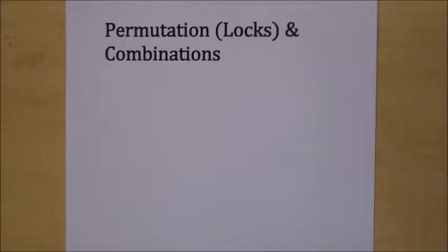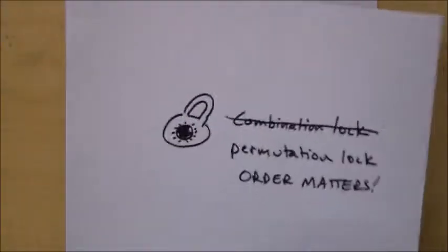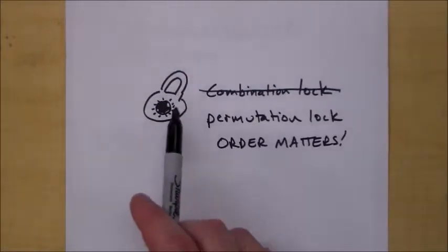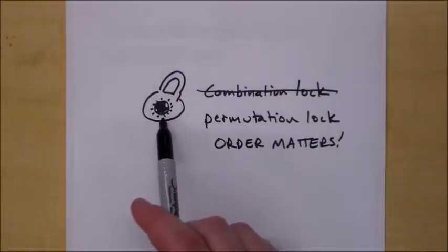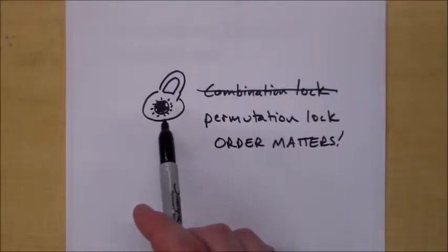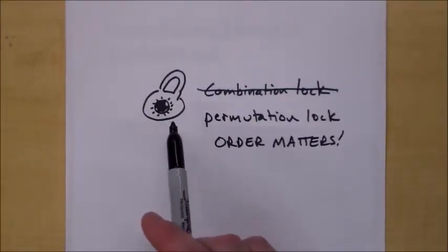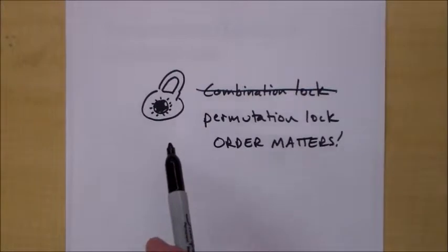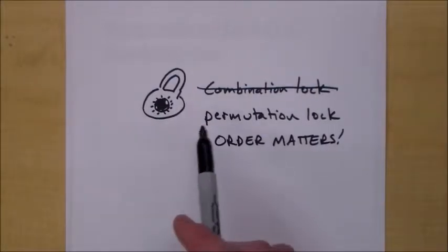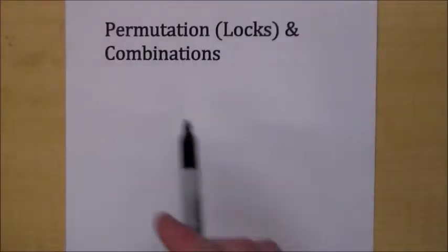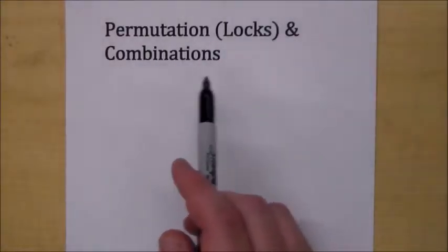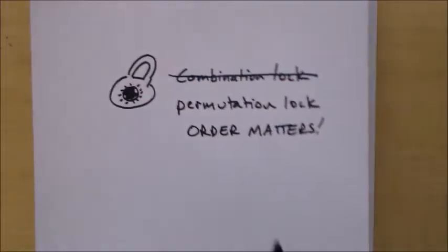Permutation locks and combinations. What do I mean by permutation locks? Well, let me go through it. This is what everyone thinks of as a combination lock, and that's what it's called, but math nerds are like, that's kind of wrong. It's really a permutation lock. That's why we call it permutation locks and combinations.